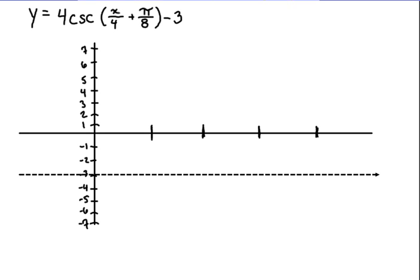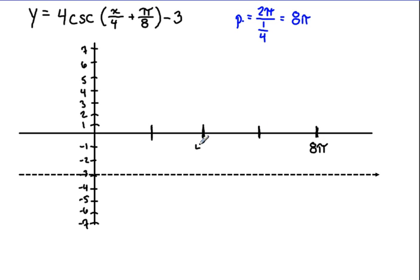The period for cosecant is 2π over b. Here our b is 1/4, so 2π over 1/4 reduces out to be 8π. When we label our x-axis, we need to go all the way out to 8π, with 4π at the halfway point and 2π and 6π filling in the remaining critical points.